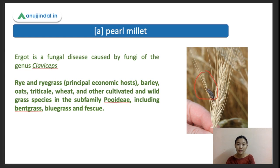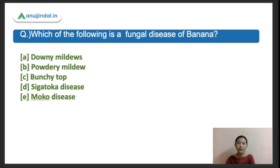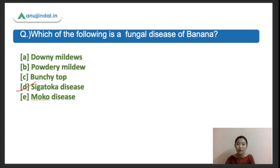The next question: which of the following is a fungal disease of banana? Options are A - downy mildew, B - powdery mildew, C - bunchy top, D - Sigatoka disease, E - moco disease. The right answer is Sigatoka disease. Downy mildew and powdery mildew are not present in banana. Bunchy top is caused by a virus, Sigatoka is caused by fungus, and moco disease is usually caused by bacteria.